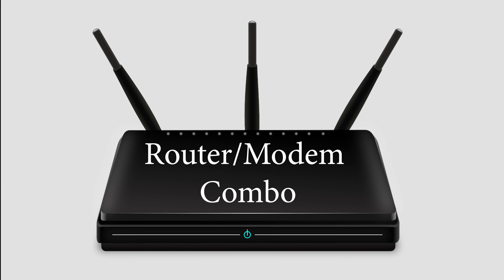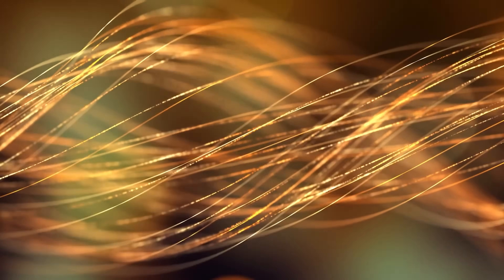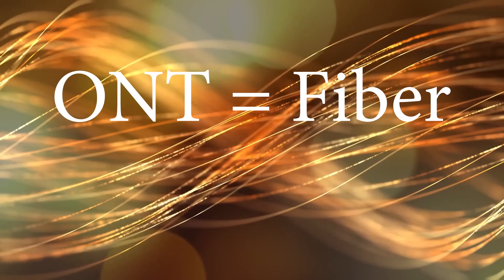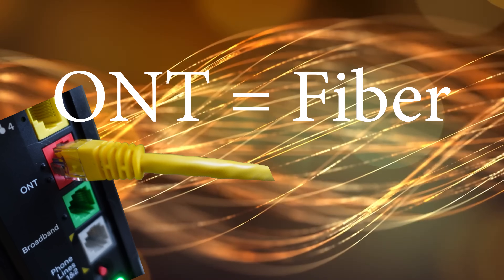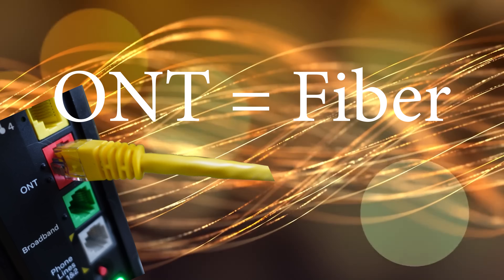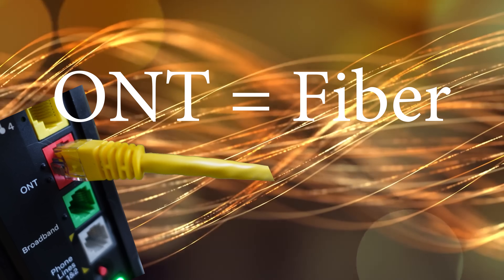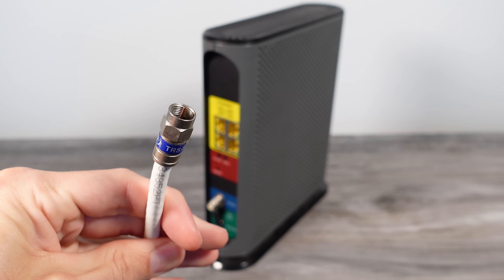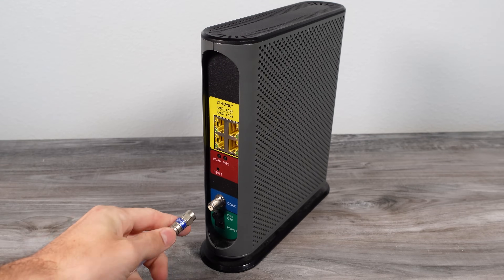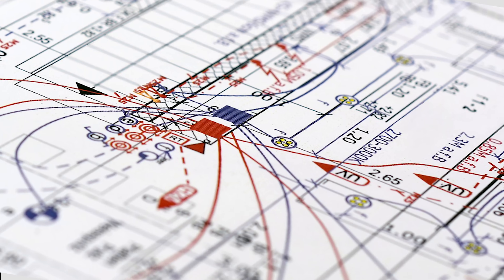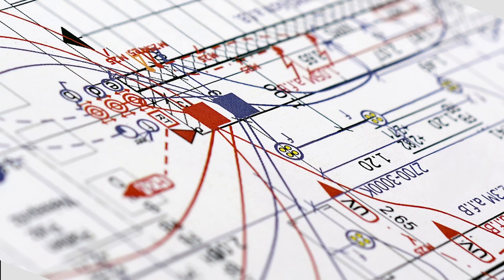All of these different ports are probably not going to be used at the same time because you usually just pick one. For example, in my home we use the ONT port because that's what you use for fiber connections — we have AT&T fiber so that's the only one we need. If you don't have fiber and need a standard cable connection, you might use the coaxial cable, or the broadband or phone line cable, depending on how it's wired throughout your house.